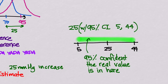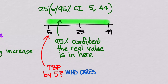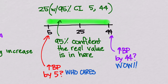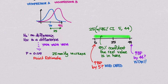The real value could be 5, which is statistically significant — vasopressor B did increase blood pressure — but only by 5, so who cares? That is not clinically significant. It also could have increased the blood pressure by 44, which is a lot — that thing works great. So confidence intervals give you an estimate of whether this effect is clinically significant, whereas the point estimate only told you whether it was statistically significant.